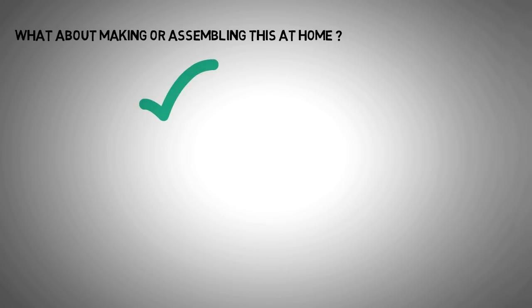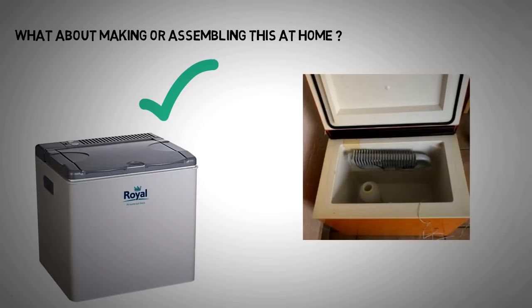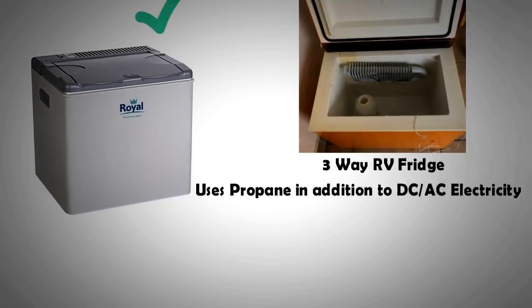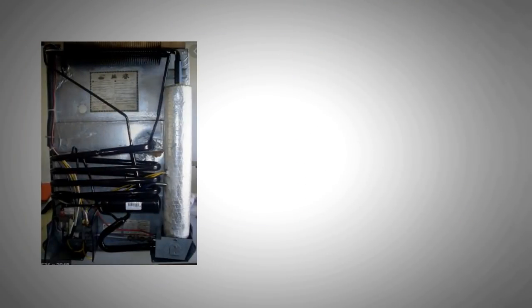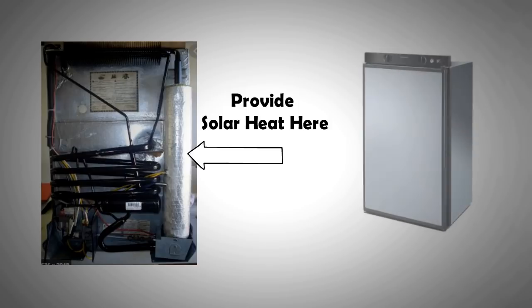The easiest way to do it would be to use a second-hand three-way motorhome or an RV fridge. Some of you might know that these refrigerators can burn propane as a heating source. They can also use DC battery or grid electricity, hence the name three-way fridge. You will simply have to take the generator section of the fridge and connect it to a hot fluid tank that is heated by the solar evacuated tube collectors.